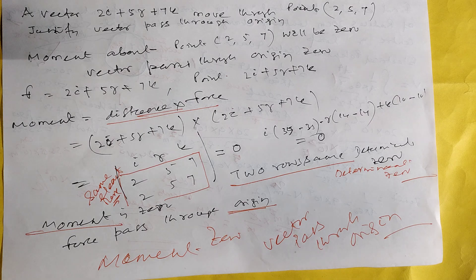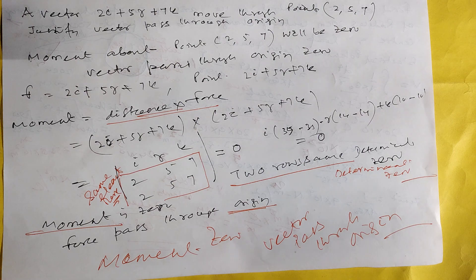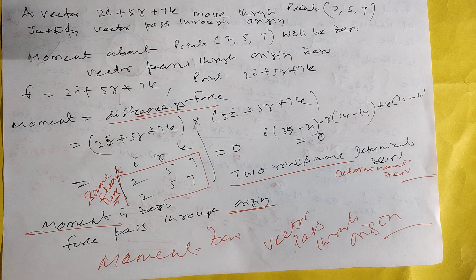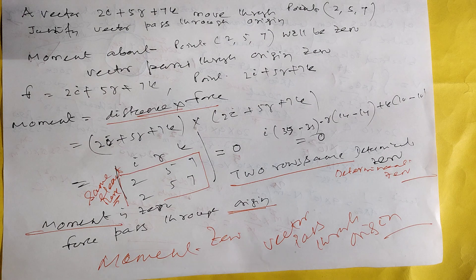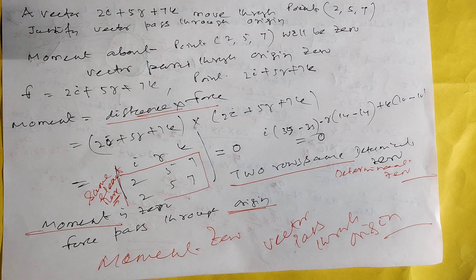A vector 2i plus 5j plus 7k moves to a point (2, 5, 7). Just create a vector passed to the origin. What is required? Moment should be zero.